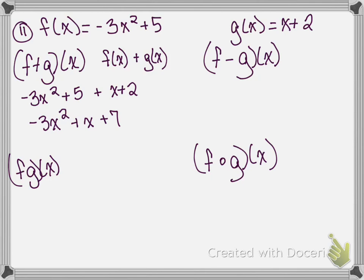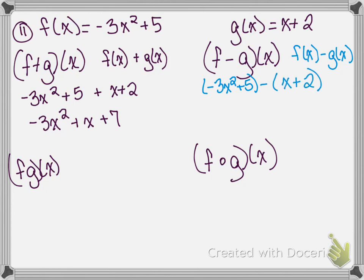For our next one we are subtracting: f of x minus g of x. Students often forget to distribute the negative to all of g of x. So it's actually negative 3x squared plus 5 minus x plus 2. We have to distribute the negative, so we have negative x minus 2. Once we combine like terms, we have negative 3x squared minus x plus 3.